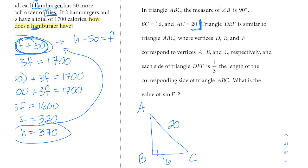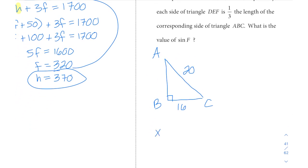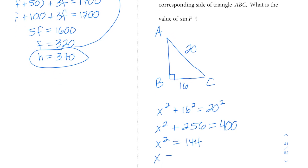If you recognize this, this is one of your triplets—a 3, 4, 5 triplet that has been expanded. Even if you didn't recognize it and you needed to use Pythagorean theorem, you can. You would do x² + 16² = 20². That would give you x² + 256 = 400. Subtract that, x² would equal 144, and this missing side over here would be 12.